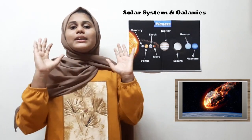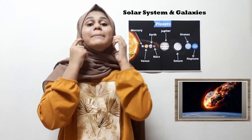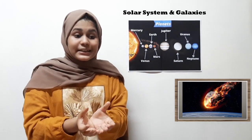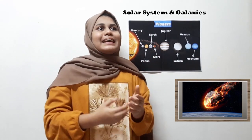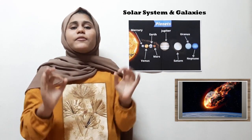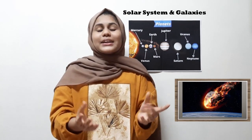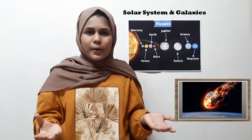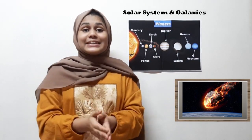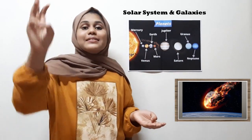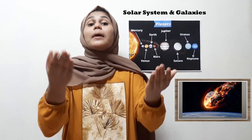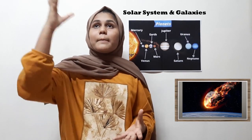Meteorites are lumps of rocks and iron found in space — they are considered debris of comets. About 25 million meteorites fall on the Earth's atmosphere every day. We don't see them on our windows because once a meteorite falls into Earth's atmosphere, the third layer — the mesosphere — protects us from meteorite showers.